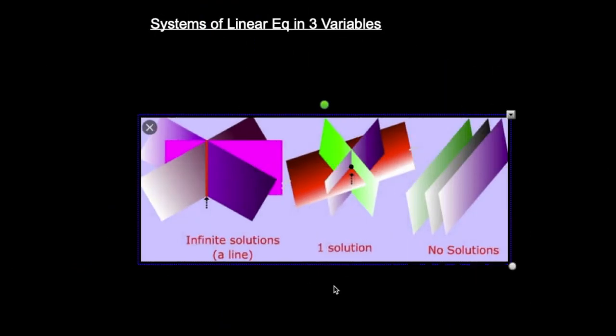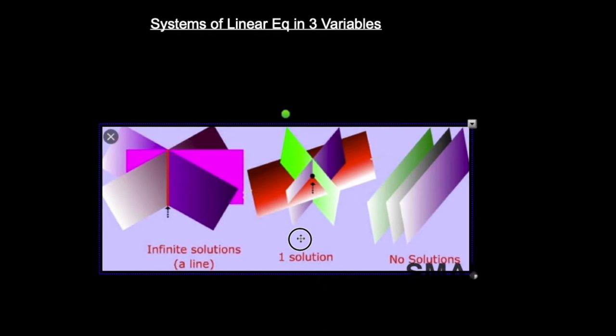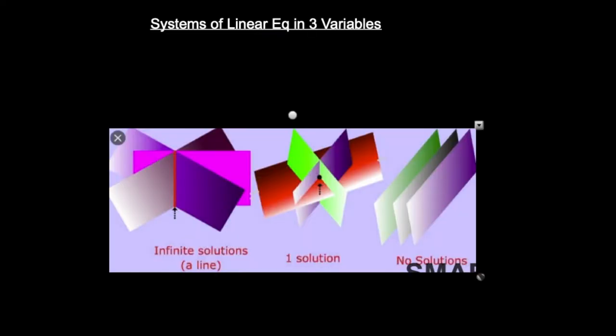Now we're doing a system of linear equations in three variables. Systems like this have x, y, and z instead of just x and y — three variables. If you have a system of linear equations in two variables, you need at least two equations to solve for an ordered pair. If you have three unknowns, you need at least three equations to solve for that ordered triple.